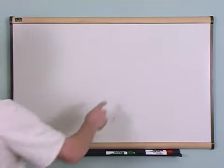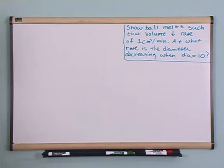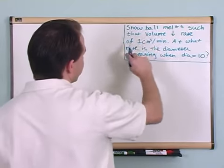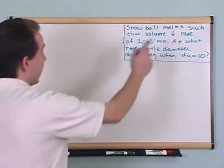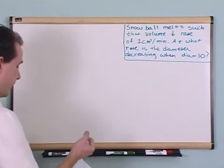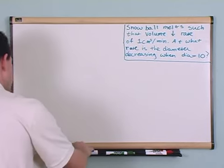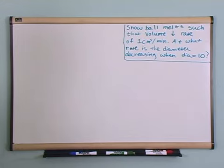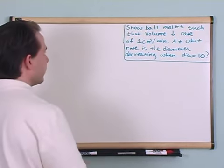What I'm going to do is write a problem down and we're going to talk about it for a minute, talk about a strategy, and then go ahead and try to solve it. Here's our first problem: we have a snowball that is melting, and as it melts it gets smaller and smaller. It tells us that the volume of the snowball decreases at a rate of one cubic centimeter per minute, and it's asking us at what rate is the diameter decreasing when the diameter is equal to 10 centimeters. These kinds of problems typically just kill people because there are a lot of numbers and terminology.